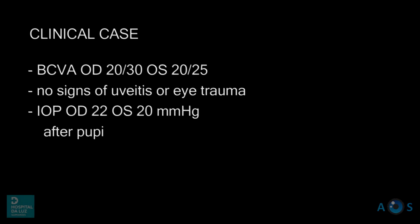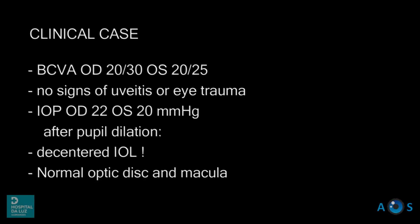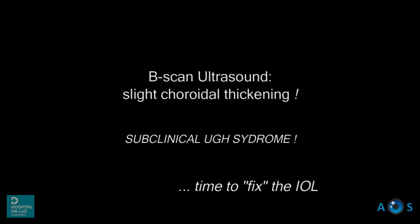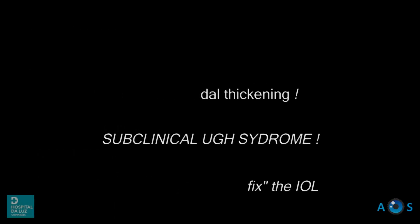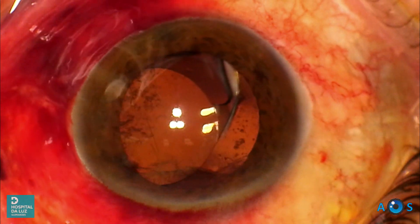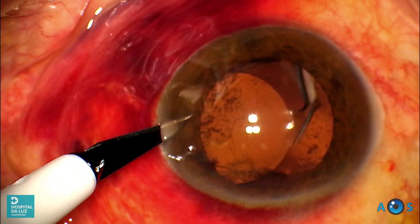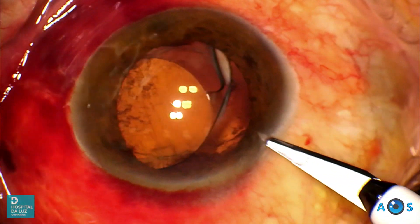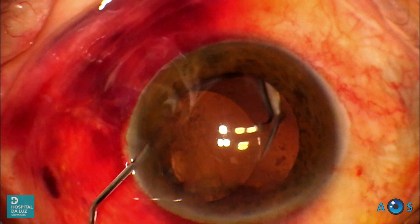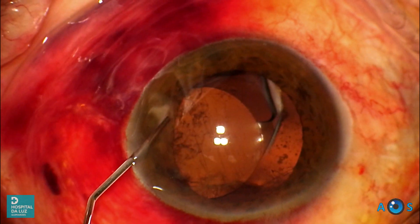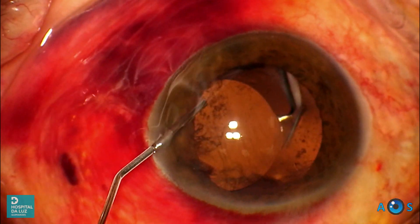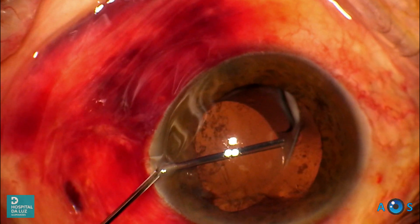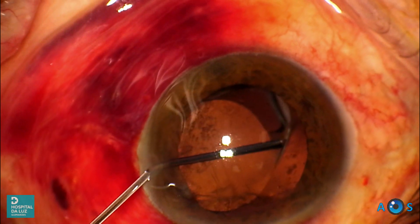The patient had not noticed visual acuity loss and no intraocular inflammation was apparent. However, B-scan ultrasound indicated slight choroidal thickening suggestive of uveal inflammation, therefore the misplaced IOL had to be addressed.